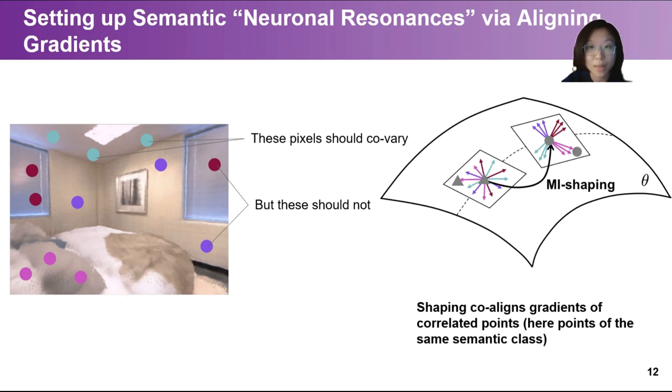Thus, maximizing the absolute cosine similarity of Jacobians of two points from the same semantic structure is equivalent to maximizing their mutual information. In other words, we should align the gradients of semantically correlated points and push away gradients of points from different semantic classes.